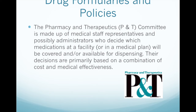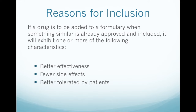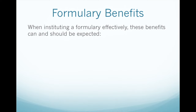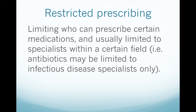If a drug is to be added to a formulary when something similar is already approved, it will exhibit one or more of the following: better effectiveness, fewer side effects, better tolerated by patients, or lower cost — at least one of these four qualities. Formulary benefits include best available medication choices, decreased inventory items and amounts, negotiated pricing on preferred medications, and restricted prescribing — limiting who can prescribe certain medications, usually to specialists in a certain field. For example, antibiotics may be limited to infectious disease specialists only.